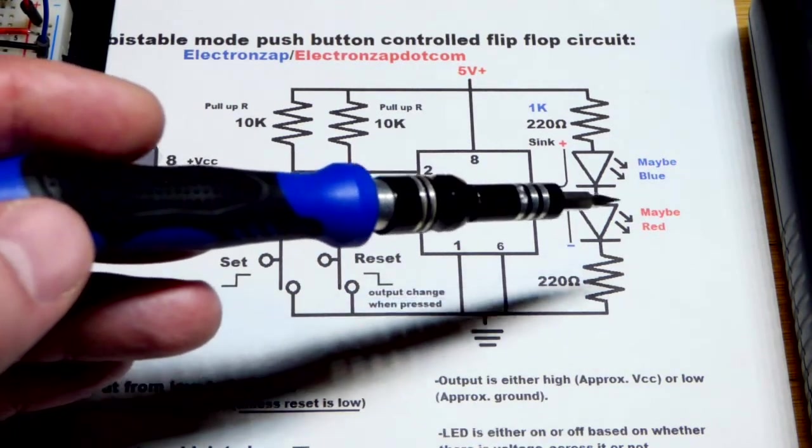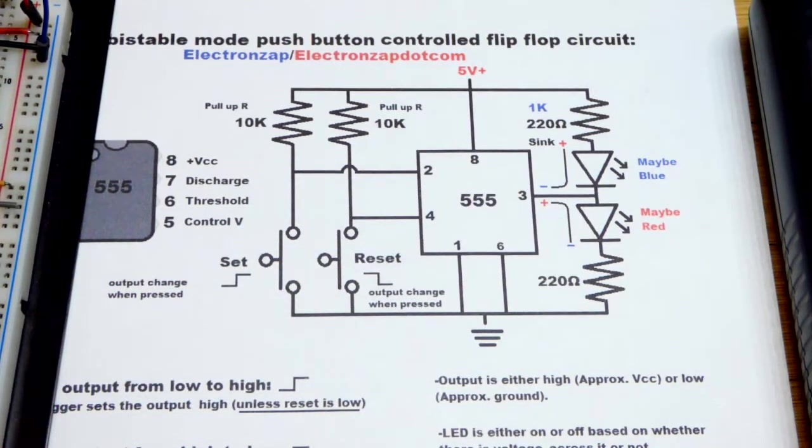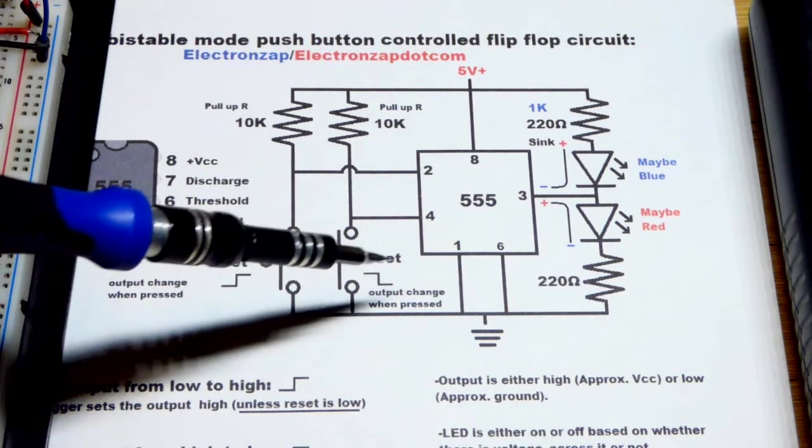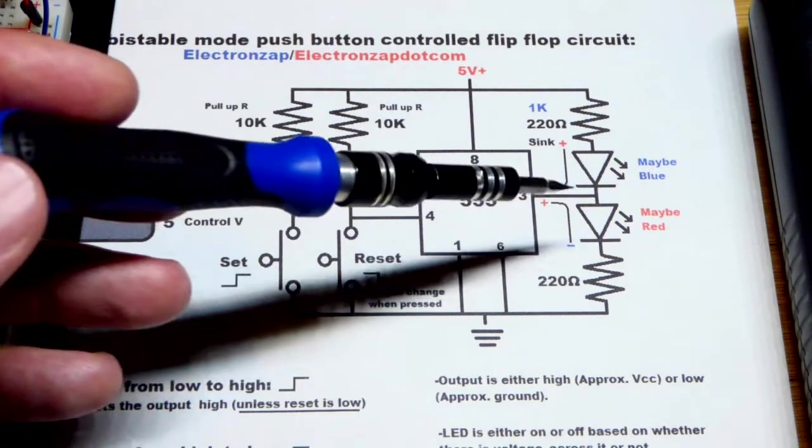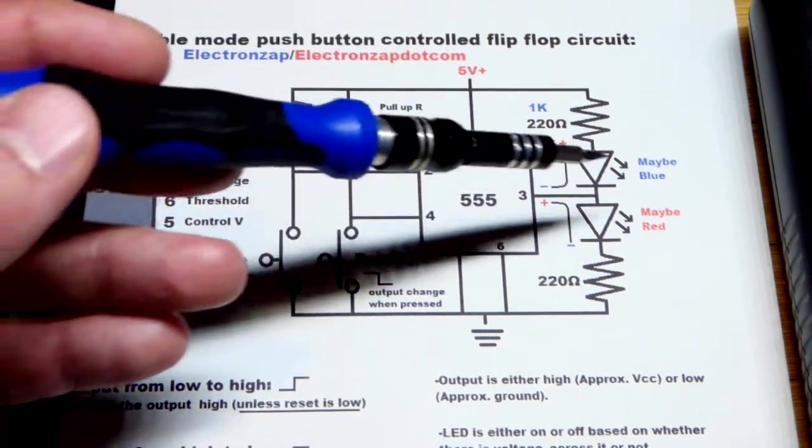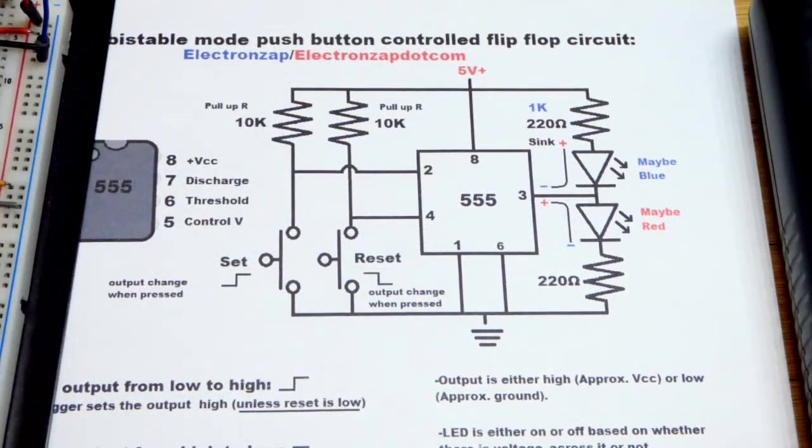But it will go high, and in this case, the red LED will light up the circuit that we're going to wire. If the output is high and we press the reset button, then the output is going to go low. And in this circuit, the blue LED is going to light up. Because the output is low, we'll have the positive rail over there, and it will light up.